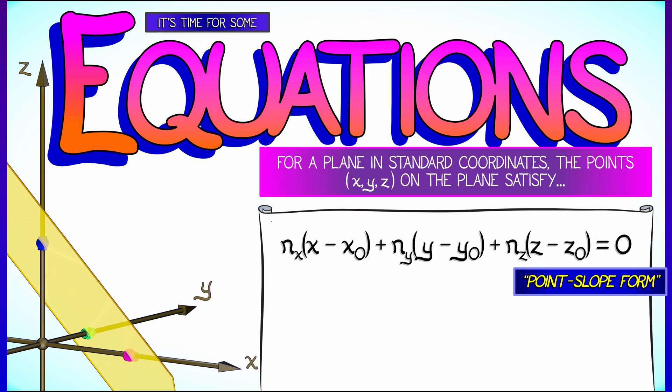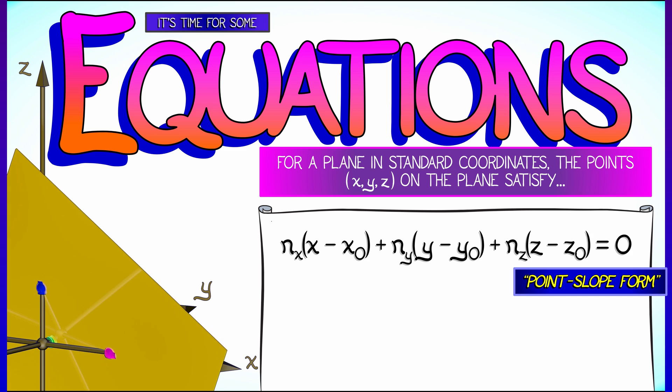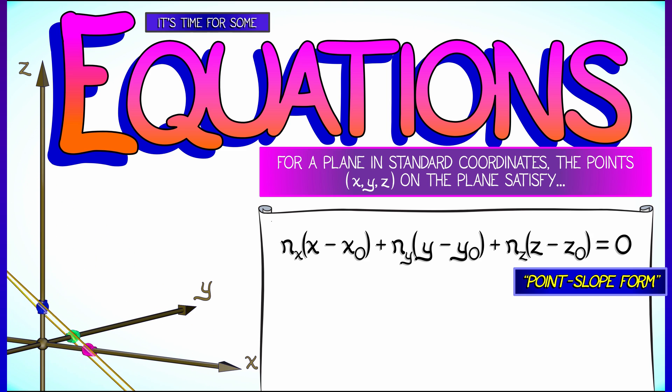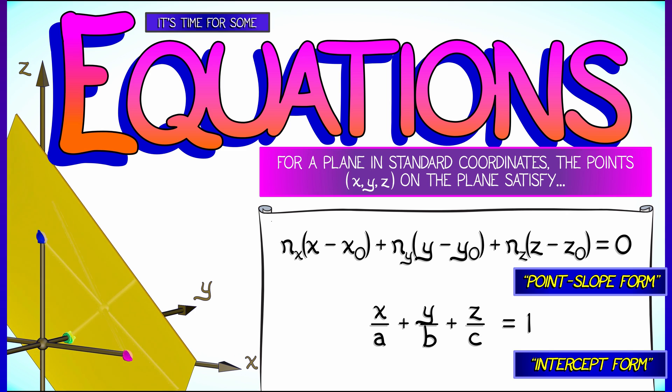Now that's one type of equation, one way to specify a plane. Another way is the analog of the intercept form, where now we have an x-intercept a, a y-intercept b, and a z-intercept c. And in this case, the analog of the intercept form is very similar: x over a plus y over b plus z over c equals one.